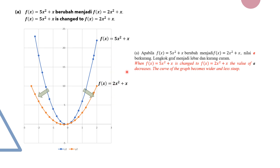Conversely, if we reverse this — increasing from 2 to 5 — when the coefficient of x squared (a) is a positive value and increases, the curve will tend to close up and the slope will increase. That is Part A.